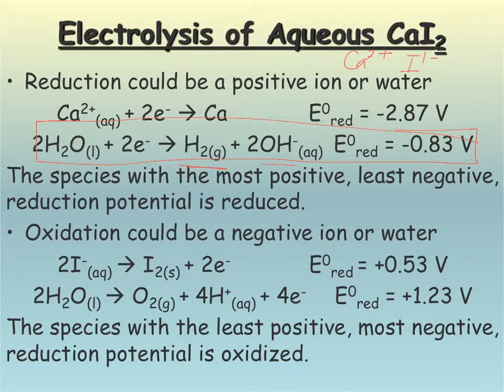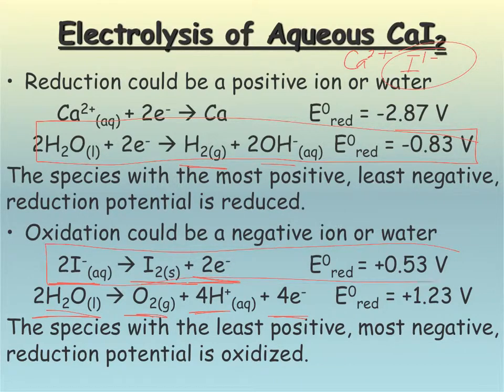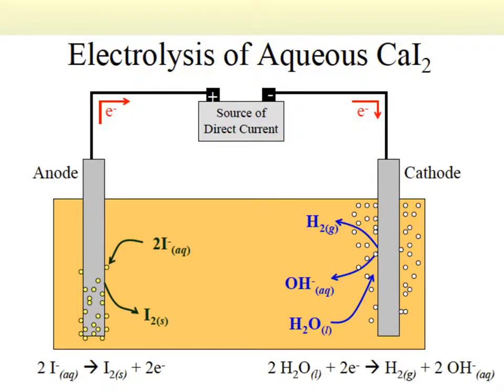All right, now for the oxidation, I have to think about my I minus ion. Okay, it could lose two electrons and be reduced to the I2 solid. Or my water could be reduced into oxygen gas and some H plus ions. Okay, so when I look at these, I want the most negative. Okay, least positive. So that's definitely going to be my I. Okay, so it looks like this is going to be my anode. And this is going to be my cathode.